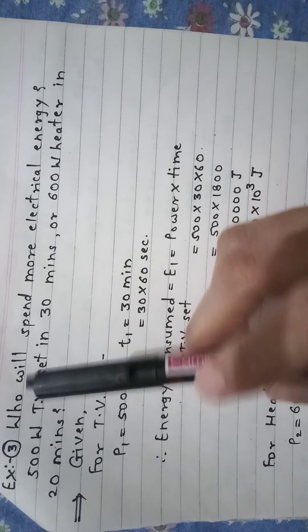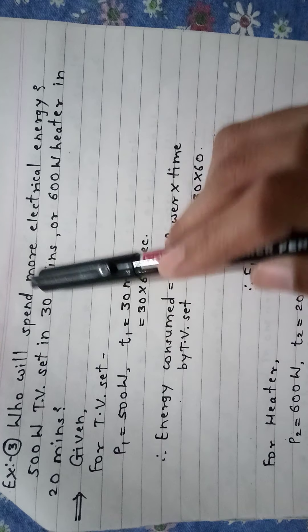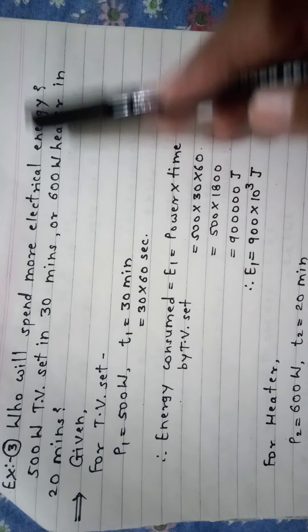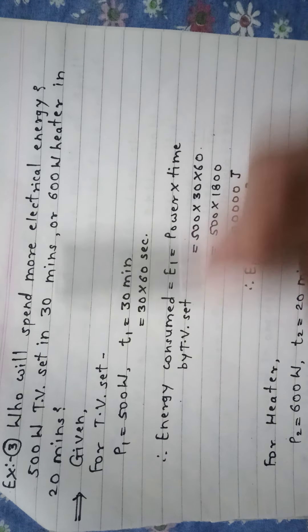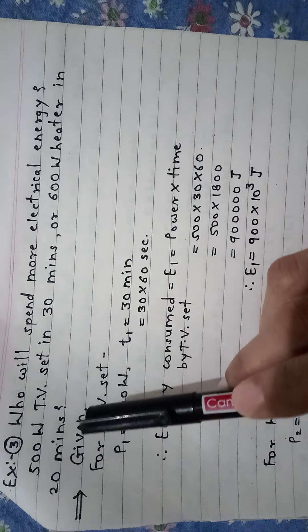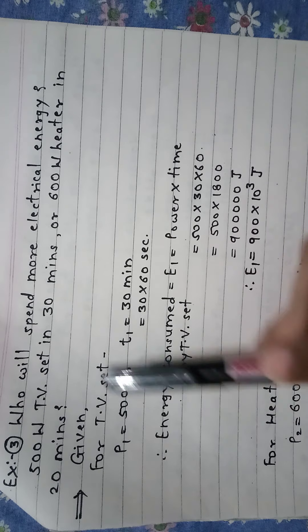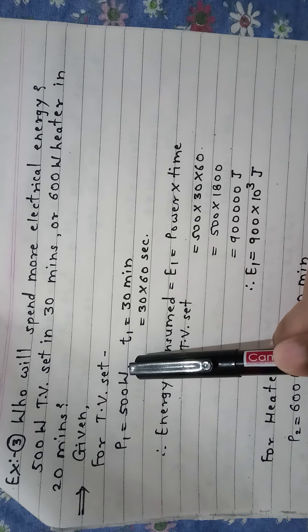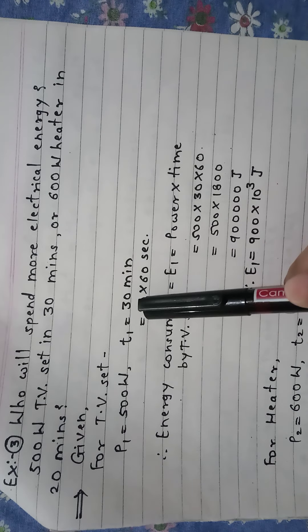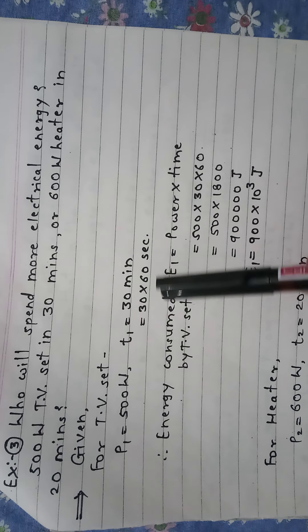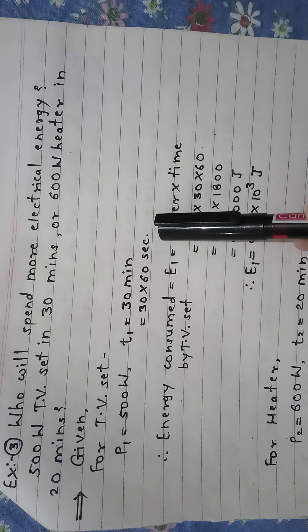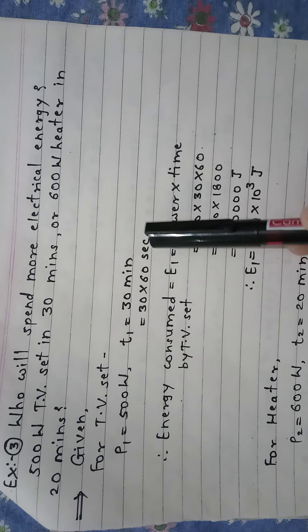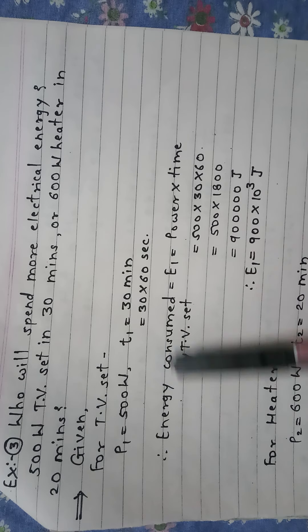Now example number 3: who will spend more electrical energy — a 500 Watt TV set in 30 minutes or a 600 Watt heater in 20 minutes? Given things for the TV set: P1 is equal to 500 Watt, T1 is equal to 30 minutes, that is equal to 30 into 60 seconds, because here we converted minutes into seconds.